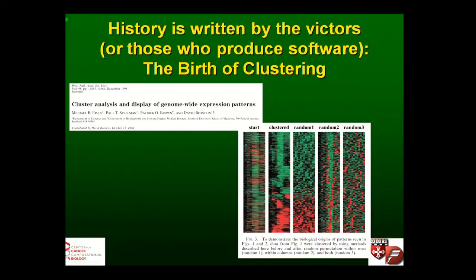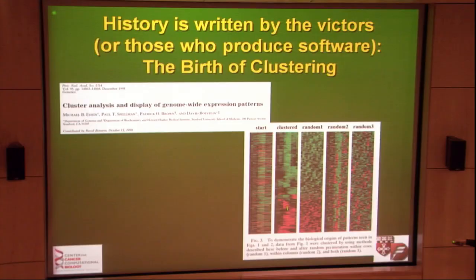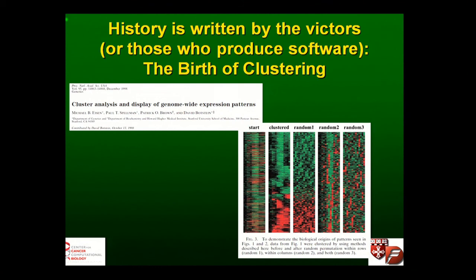Another related paper appeared at about the same time in which they looked at yeast during the cell cycle and showed different temporal patterns of expression. The real advance and impact on the community was not in doing clustering, which had been done before, nor in producing heat maps, but in producing a tool that one could use to actually generate clusters. This led to a proliferation of clustering tools. This was also the start of tormenting people who are red-green color blind.